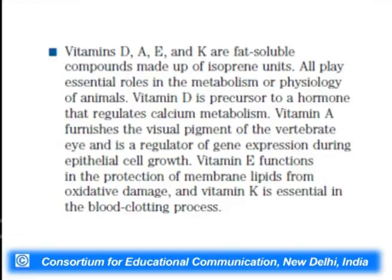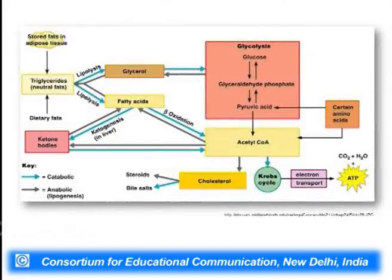Vitamins are also derived from fatty acid chains. Fat-soluble vitamins D, A, E, and K are made up of isoprene chains and play important roles in animal metabolism and physiology. Vitamin D regulates calcium metabolism; vitamin A furnishes visual pigment in vertebrates and regulates gene expression during epithelial cell growth; vitamin E protects membrane lipids from oxidative damage; vitamin K is essential for blood clotting.